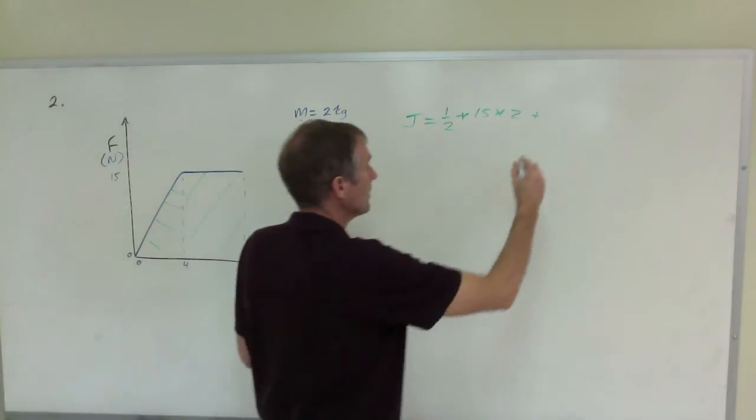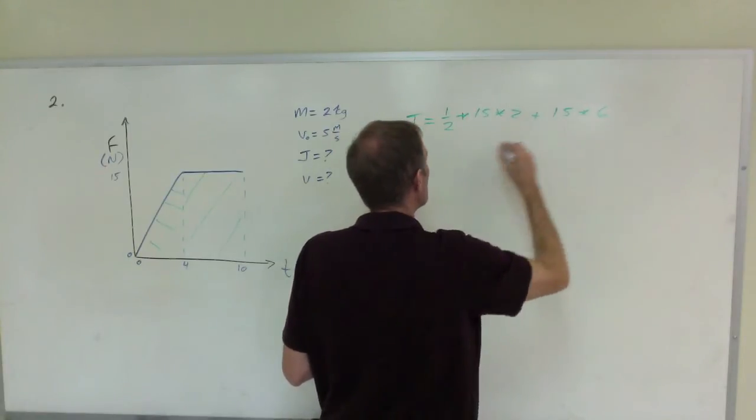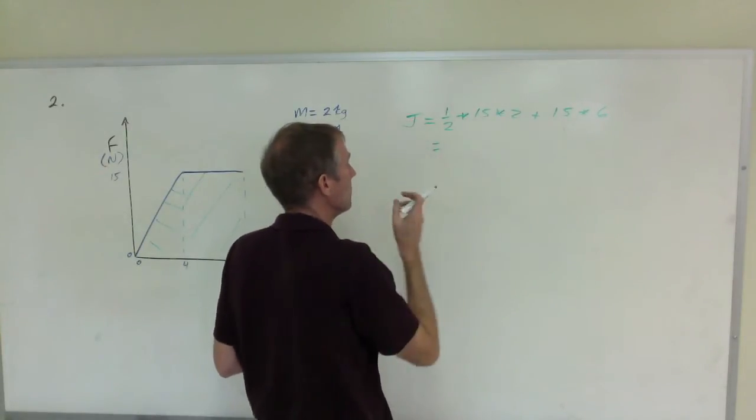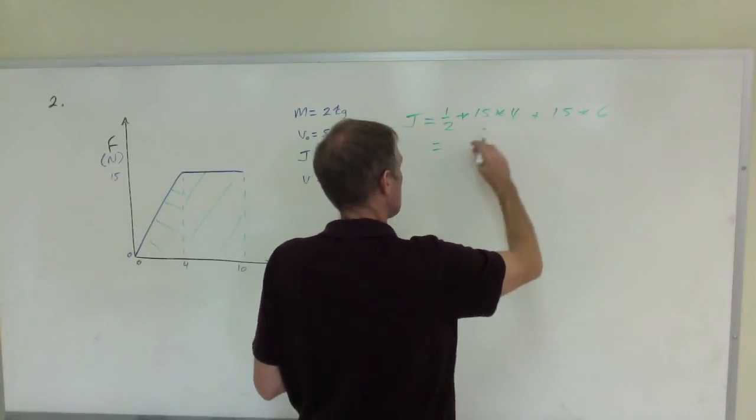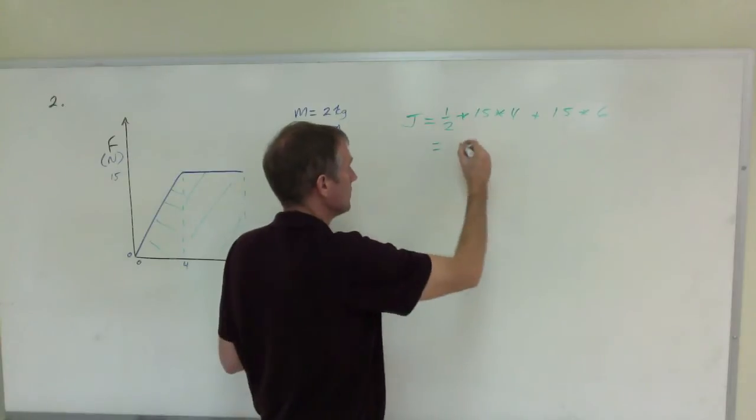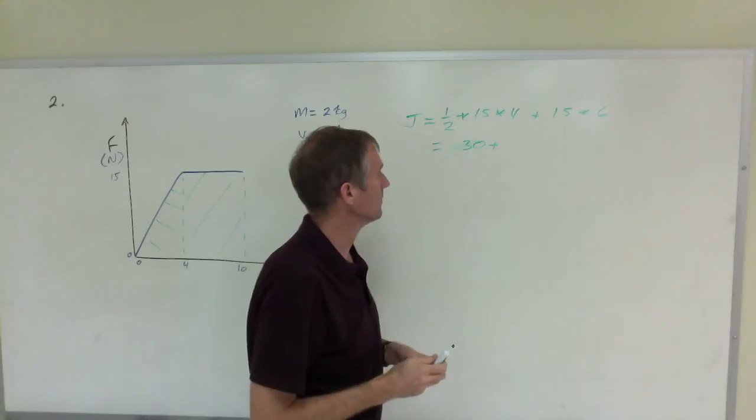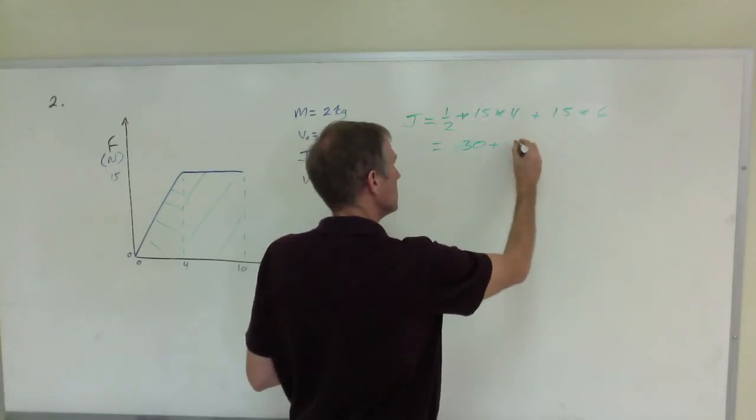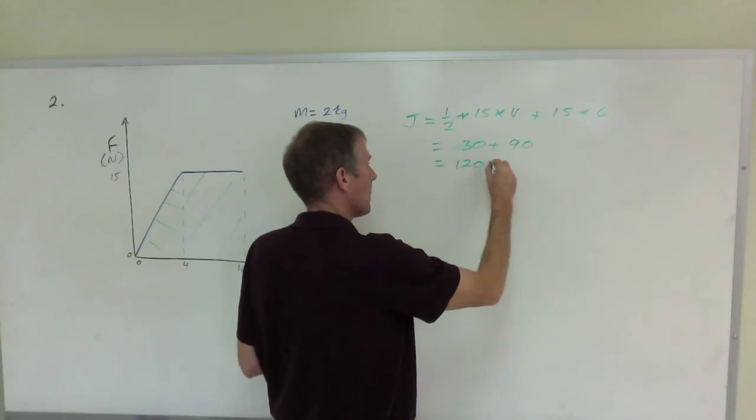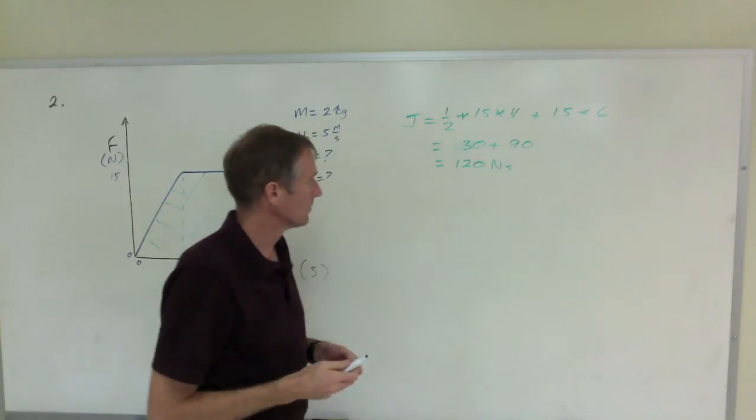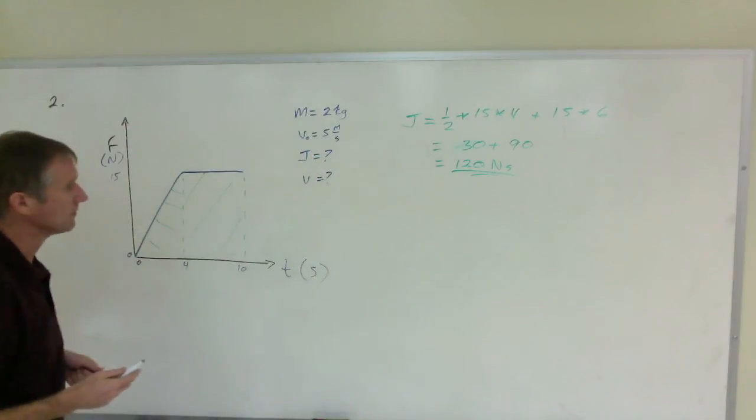4 to 10 is 6. So that's going to be times 4. So one-half of 4 is 2, times 15 is 30. Plus 15 times 6 is 90. So that is 120 newton-seconds. So there's the impulse. Again, it comes from the area of the graph, the force-time graph.